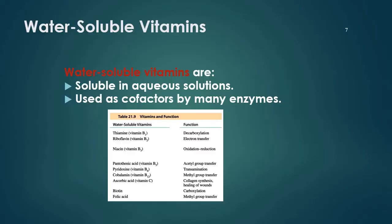Water-soluble vitamins are soluble in aqueous solution, and they are always used as cofactors by many enzymes. For example, thiamine (vitamin B1) is a water-soluble vitamin whose function is for decarboxylation reactions in our body. In our body, there are many types of reactions that are assisted by enzymes, and these enzymes need cofactors. These cofactors come from the vitamins that we consume.